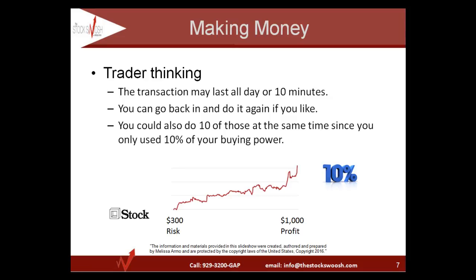As a trader, you may be in a trade only 10 minutes or maybe all day. You can also go back and redo the play once you're out, or do another play again and again all day long. From a money perspective, you could theoretically do 10 of those plays at one time, because you've only used 10% of your total buying power — controlling $20,000 worth of stock while having the ability to control $200,000, having used $5,000 of your $50,000.